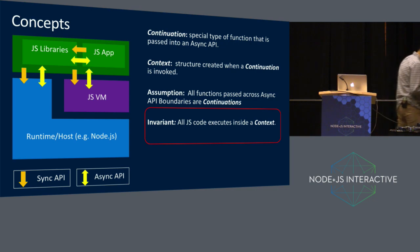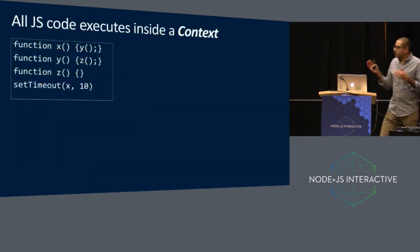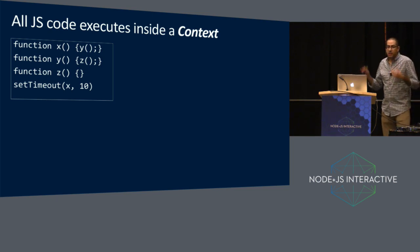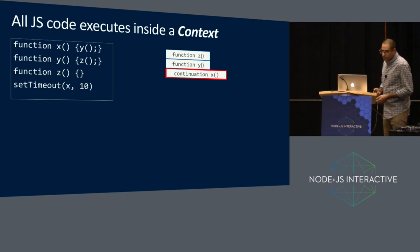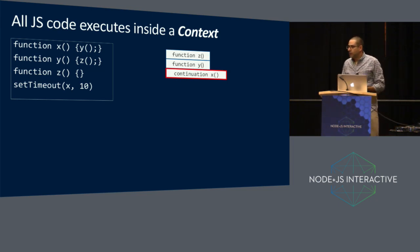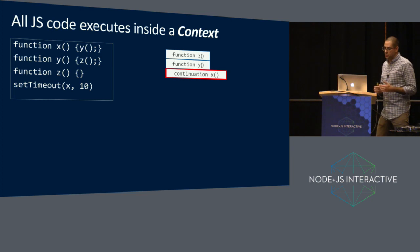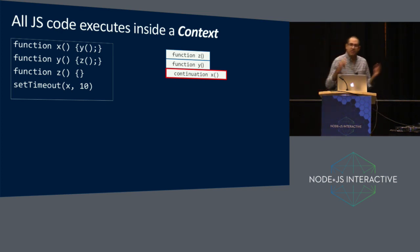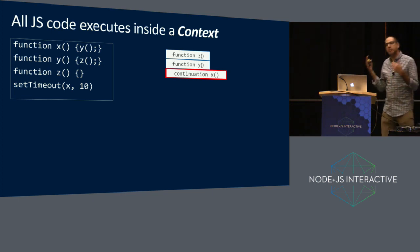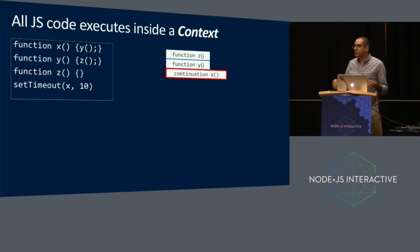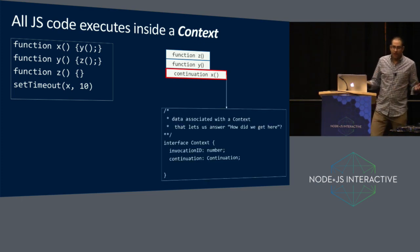This invariant — all JavaScript code executes inside of a context. We've got setTimeout, we pass in a continuation X. X calls Y and Y calls Z; Y and Z are just functions. At some point, your call stack is going to look like this. X is a special call stack because it's a special function. This lets us say: for any given stack frame, we can find what our context is by looking down the stack. This invariant implies specifically that there's a continuation frame on the stack at all times — so if you have a given frame, you can look down, find your continuation.